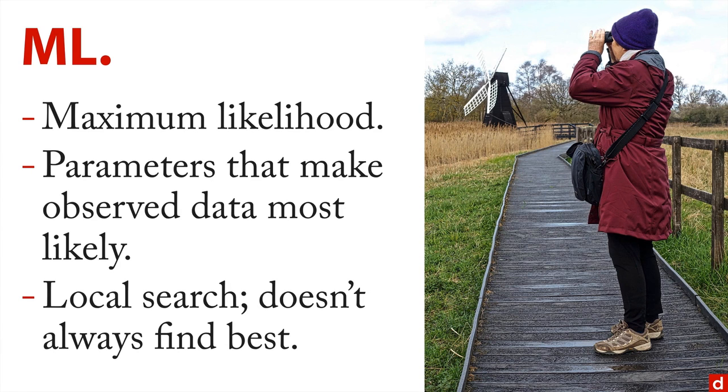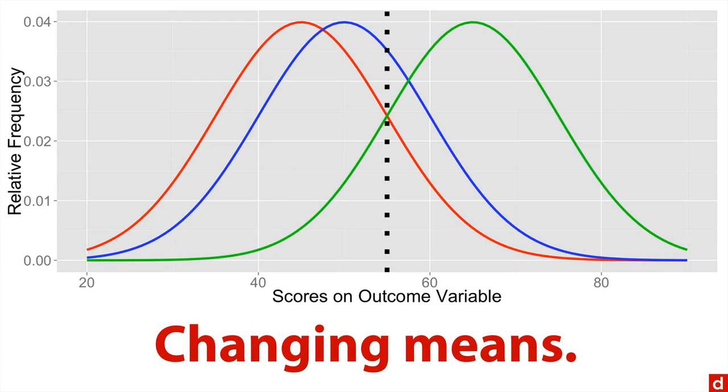Let me give a very simple example of how this works. Let's assume that we're trying to find parameters that maximize the likelihood of this dotted vertical line here at 55. And I've got three possibilities, I've got my red distribution, which is off to the left, the blue, which is a little more center in the green, which is far to the right. And these are all identical, except they have different means. And by changing the means, you see that the one that is highest, where the dotted line is, is the blue one. And so if the only thing we're doing is changing the mean, and we're looking at these three distributions, then the blue one is the one that has the maximum likelihood for this particular parameter.